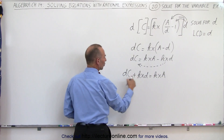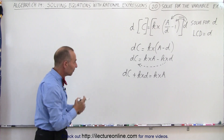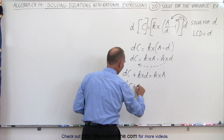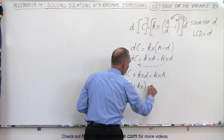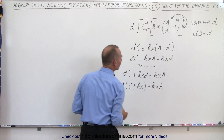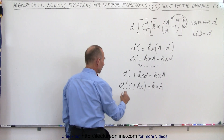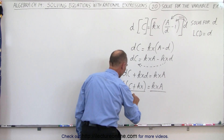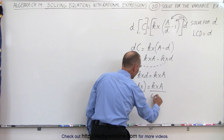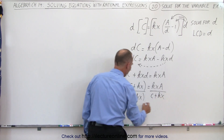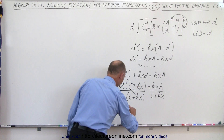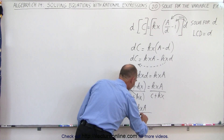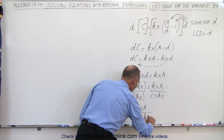Now we see these two terms that contain the D, so we're going to factor out a D. So we have D times C plus KX equals KXA. And finally, we're going to divide both sides of the equation by the factor here, which is C plus KX. Notice that these two cancel out, and we're left with D is equal to KXA all divided by C plus KX.